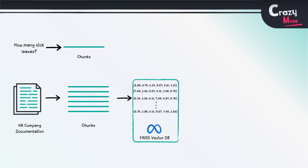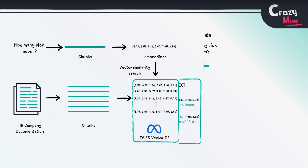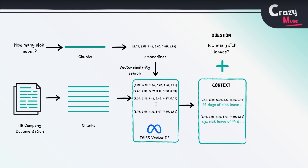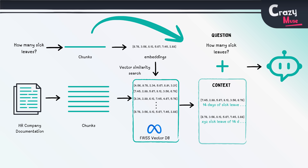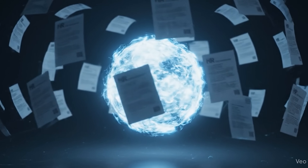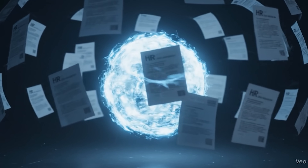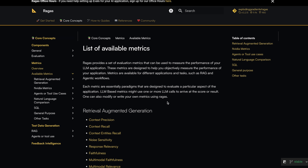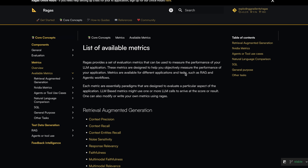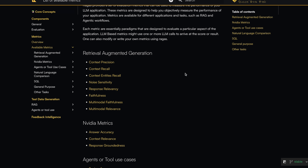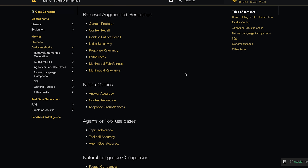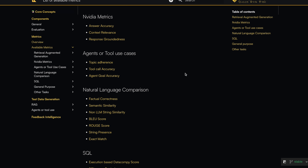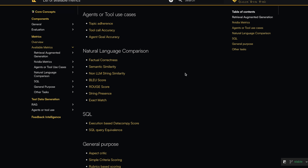LangChain retrieves the most relevant chunks and passes them along with the question as the context to the LLM, and that helps it generate the answer. This transforms a guessing problem into a searching and retrieval problem. You can also measure how grounded an output is using tools like RAGAS — it evaluates faithfulness, context precision, context recall, and many such metrics.